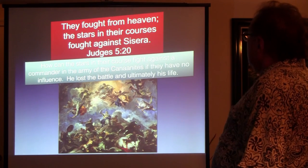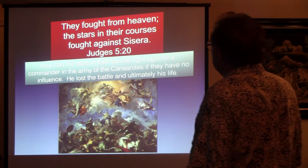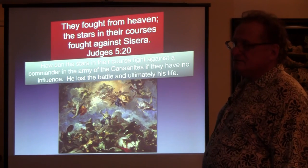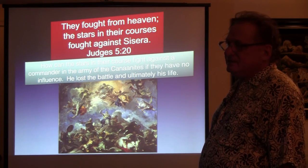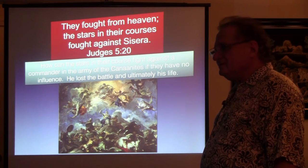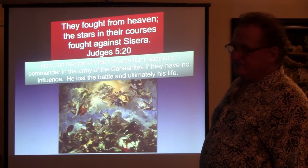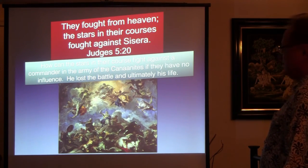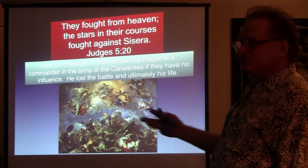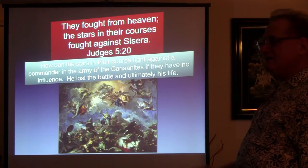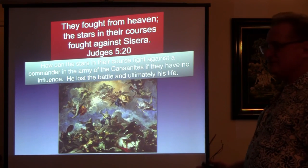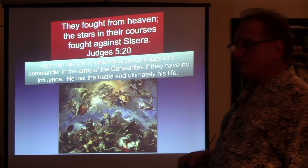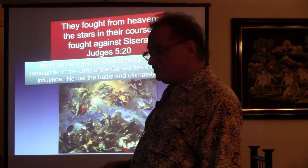This is in Judges. They fought from heaven. The stars and their courses fought against Sisera. Sisera was the captain in the army. How can they fight against him? He lost the battle. He not only lost the battle, he lost his life. How can the stars and their courses fight against the commander in the army of the Canaanites? If scripture says it did. How do you get around that? The Christians don't want you to understand all these things. They don't want to share this to you because this is contrary to what they want you to believe. They'd rather you don't look at astrology.